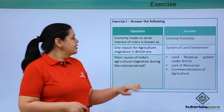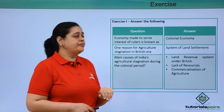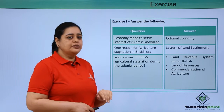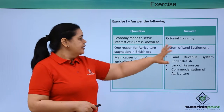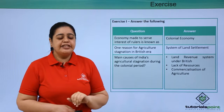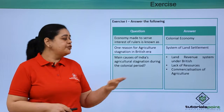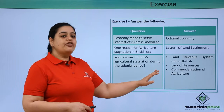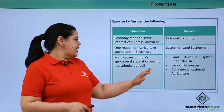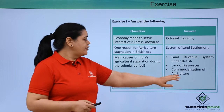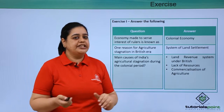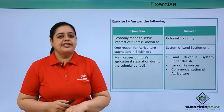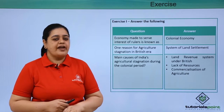Let's see the answers. The colonial economy is the economy which is made to serve the interest of the rulers. The system of land settlement which we discussed was one reason for agricultural stagnation. The main causes of agricultural stagnation during the colonial period were the land revenue system, lack of resources, and commercialization of agriculture.